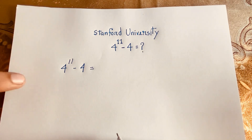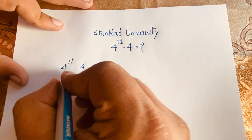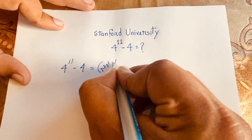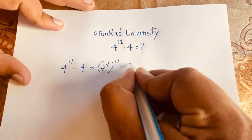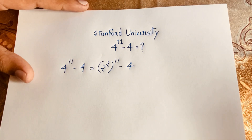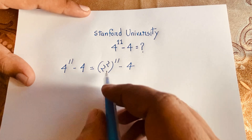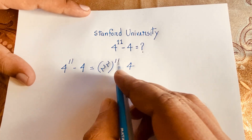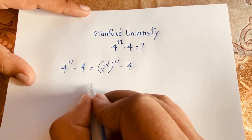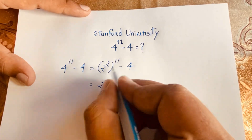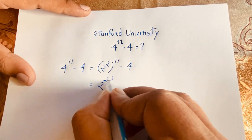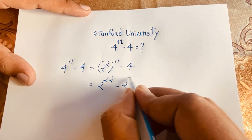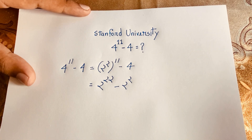Now, 4 to the power 11 — I can write 4 as 2 to the power 2, so we get 2 to the power 2, whole to the power 11, minus 4. Because of that, 2 to the power 2 times 11 it will be 2 to the power 22, minus 2 to the power 2.